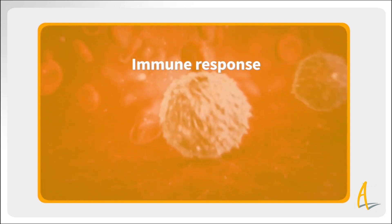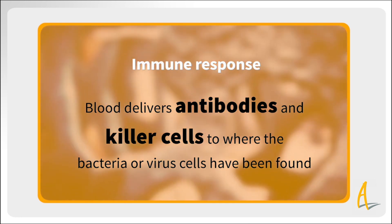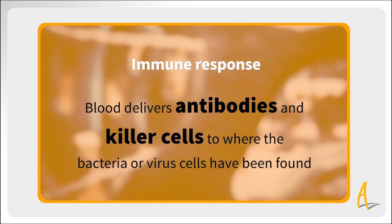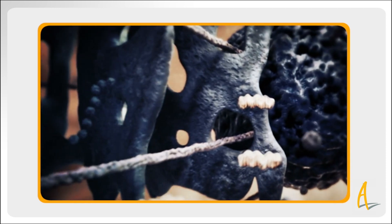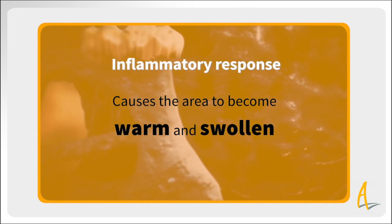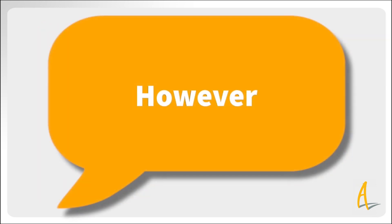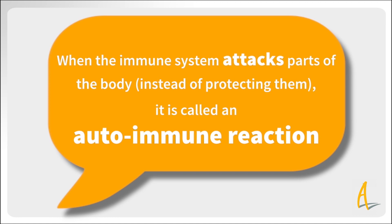During an immune response, your blood delivers lots of antibodies and killer cells to where the bacteria or virus cells have been found. This process is described as an inflammatory response, and it causes the area to become warm and swollen. However, when the immune system attacks parts of the body instead of protecting them, it's called an autoimmune reaction, and doctors don't fully understand why this occurs.